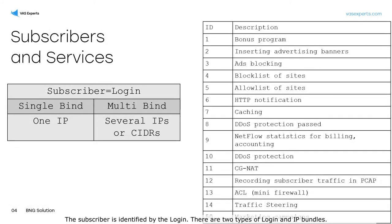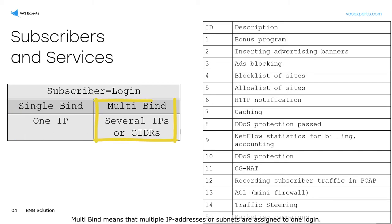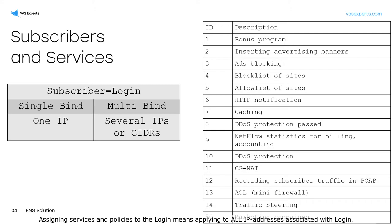The subscriber is identified by the login. There are two types of login and IP bundles: single-bind means that one IP address is assigned to one login, while multi-bind means that multiple IP addresses or subnets are assigned to one login. Assigning services and policies to the login means applying them to all IP addresses associated with that login.